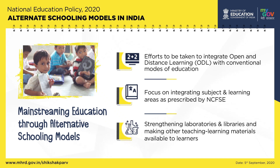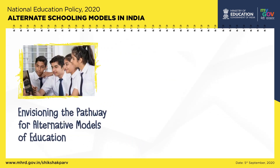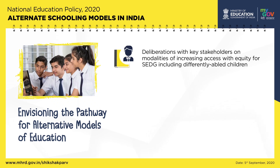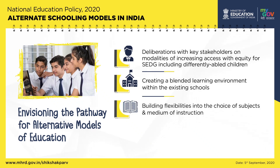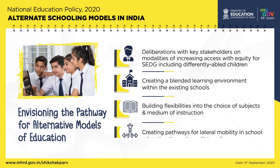Envisioning the pathway for alternate models of education through deliberations with key stakeholders on modalities of increasing access with equity for SEDGs, including differently-abled children. Creating a blended learning environment within existing schools, building flexibilities into the choice of subjects and medium of instruction, and creating pathways for lateral mobility in school education through credit transfers.